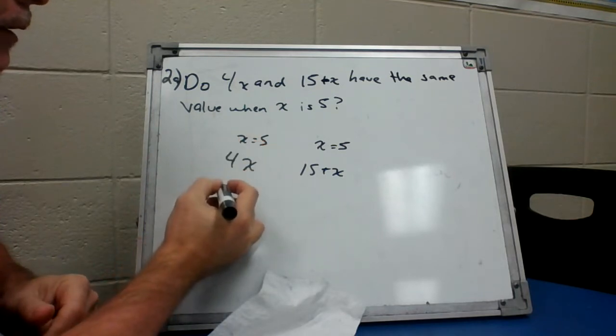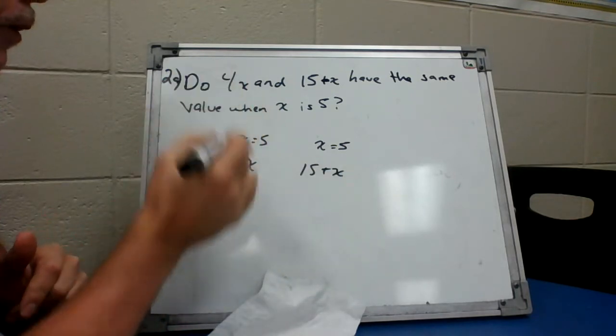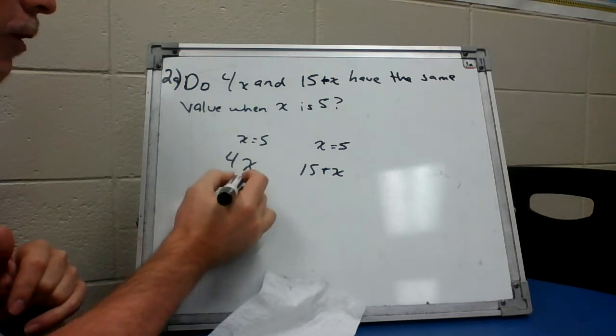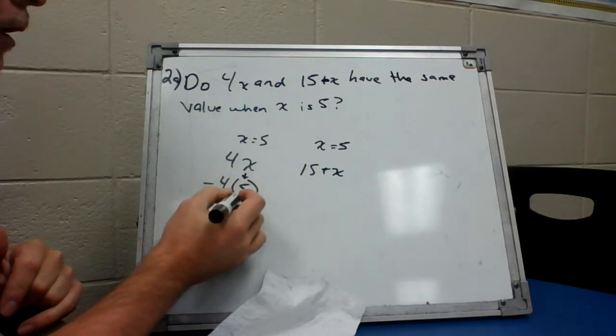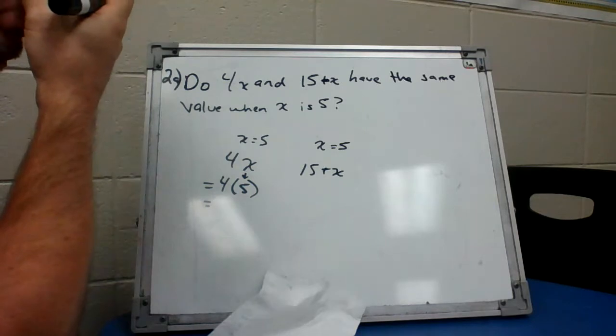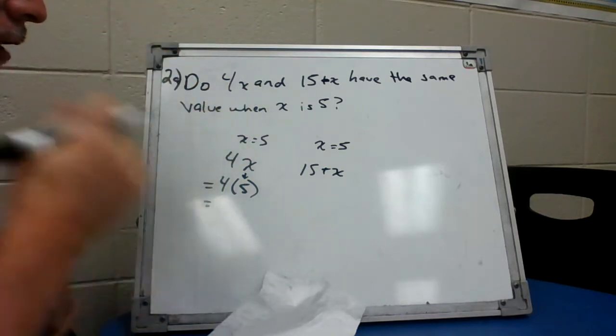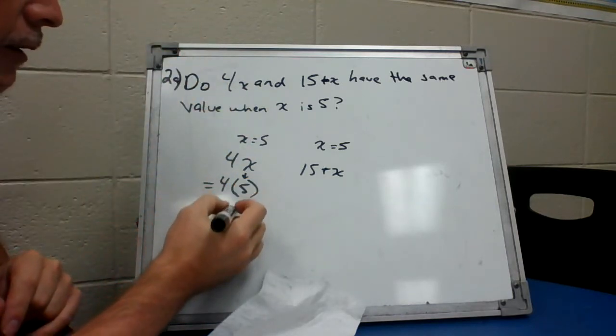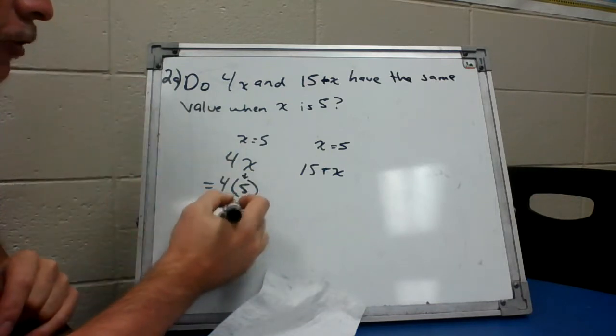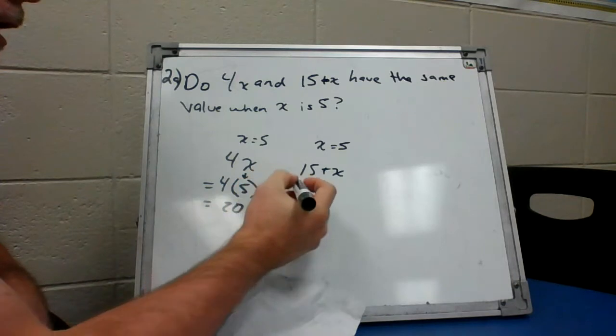Now we know x is 5, so how do we do that? We just substitute. And we understand that the value of x is 5. So we hopefully know that when two things are side by side, especially with parentheses like that, that's another way that we show division in the sixth grade. So we know that 4 times 5 is 20, so there's the value of 4x when x is 5.